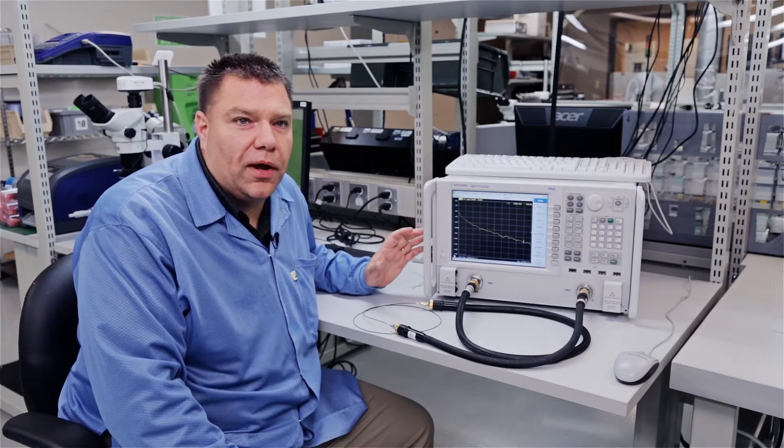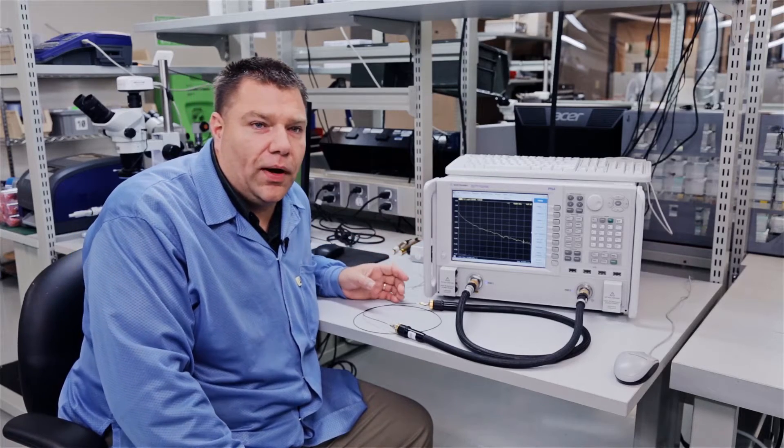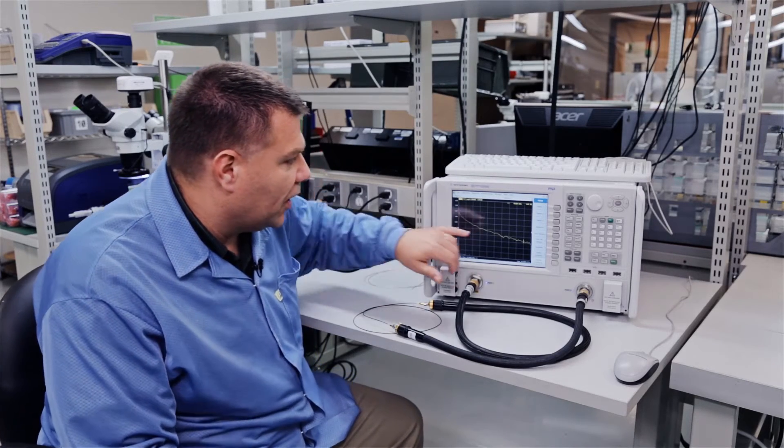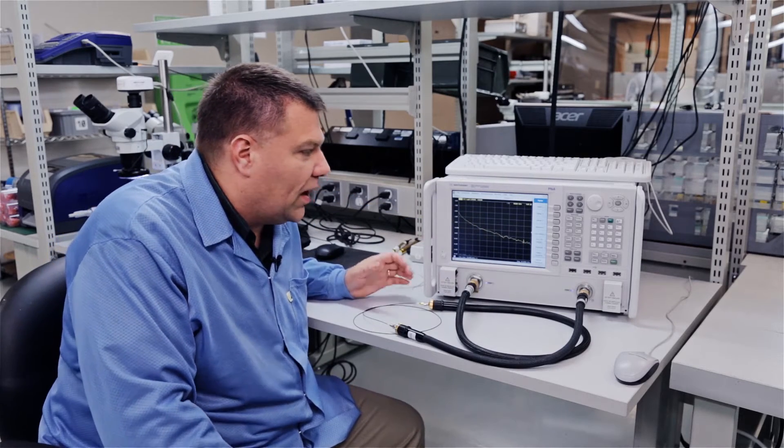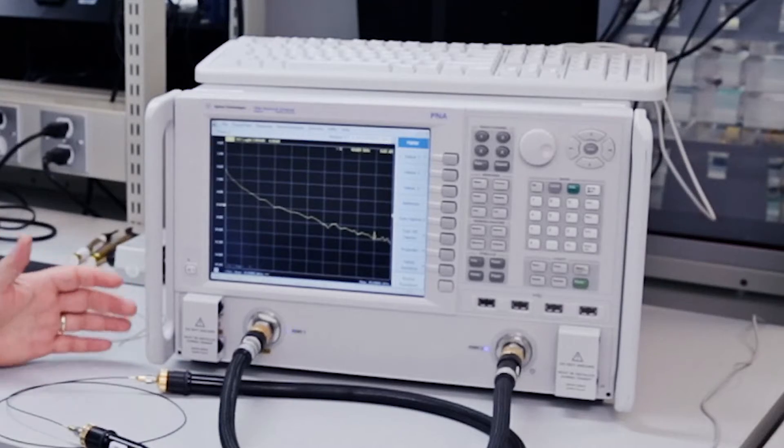So the first thing we're looking at is the S12 parameter of the coax, and we can see we've got a marker placed out here at 18 gigahertz, and we have a specific dB loss of approximately 9.2.